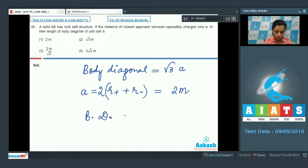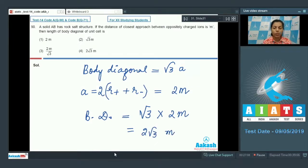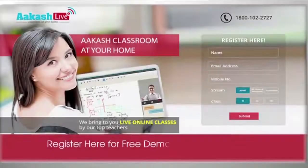So what would be the length of the body diagonal? So this body diagonal is equal to √3 into 2m, so this would be equal to 2√3m. And where this is given? This is given here in option 4, so just choose option 4 as your correct answer.